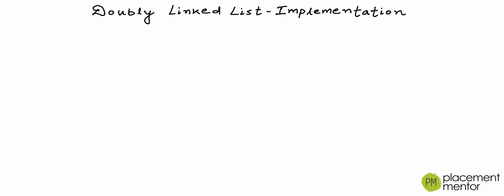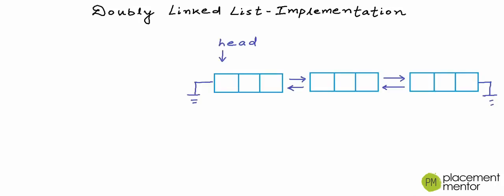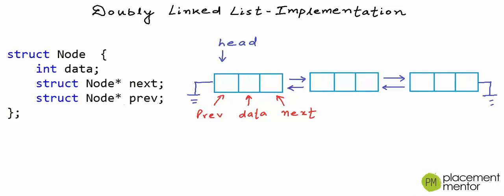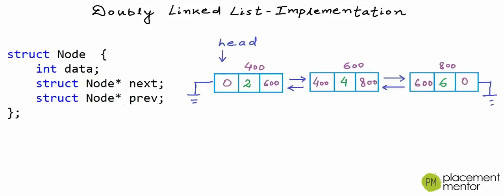In a doubly linked list, as we saw in our previous lesson, each node contains three fields. I have drawn a logical representation of a doubly linked list here. One field to store data, one to store the address of the next node, and one to store the address of the previous node. For a linked list of integers, the node will be defined like this in a C or C++ program. In the logical representation, I will fill in some data in each node. Let's say these nodes are at addresses 400, 600, and 800 respectively. I will also fill in next and previous fields, and we must also have a pointer variable pointing to the head node.